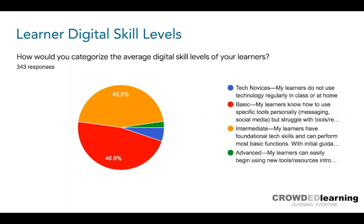They have access to the internet through their device, they know how to text, they can click a link in a text, watch the video, and text you back. That is learning at a basic level, acknowledging what the learner skill level is. The intermediate level was: my learners have foundational tech skills and can perform most basic functions, and with initial guidance from me when learning new tools, they can operate independently. But that's going to be different now — in a classroom where you can demonstrate things in person is a lot different than troubleshooting remotely. So you need to consider that as you try to engage with new tools. The goal is to keep things simple and meet learners where they are.